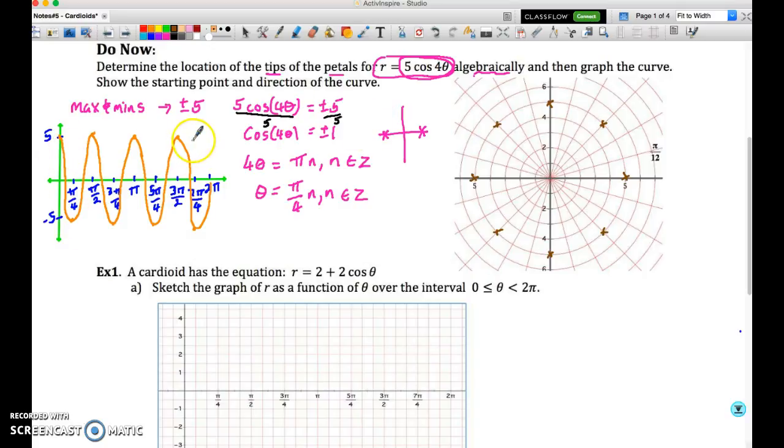And so algebraically, every pi over 4, we are going to be able to have one of the tips of the petals for the graph, the rose curve, r equals 5 cos 4 theta. What I've done is shown you graphically how that would look and how you would connect it to the algebra. And so we have a maximum at zero, a minimum at pi over 4, a maximum at pi over 2, and so forth. And so what I'm going to do now, you'll also notice on the polar graph that I've started by marking where each of the petals will be, where the tips of the petals will be, and that's rotating multiples of pi over 4. And then the last thing we need to make sure that we understand is the starting point and direction of the curve.